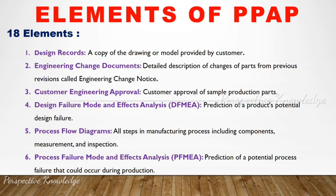PPAP has 18 elements. The first is Design Records — a copy of the drawing or model provided by the customer. The second is Engineering Change Document — a detailed description of changes to parts from a previous revision, also called an Engineering Change Notice, documenting any changes already made.